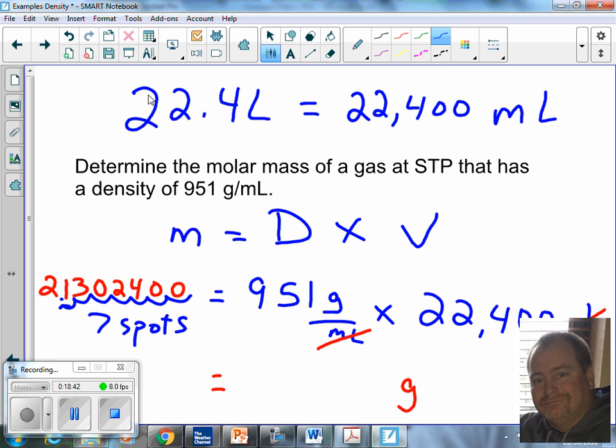So, I jumped my decimal seven spots. So, my value is going to be three sig figs 2.13 times ten to the seventh.